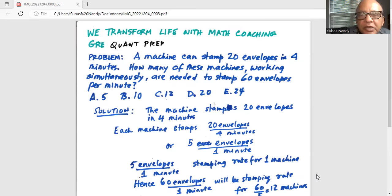A machine can stamp 20 envelopes in four minutes. How many of these machines working simultaneously are needed to stamp 60 envelopes per minute?